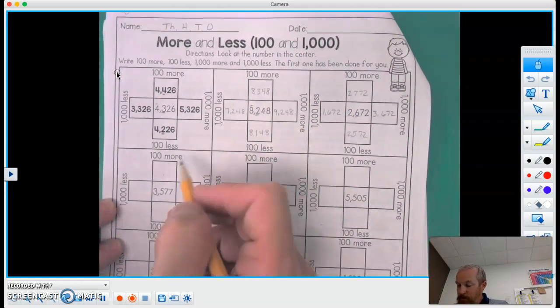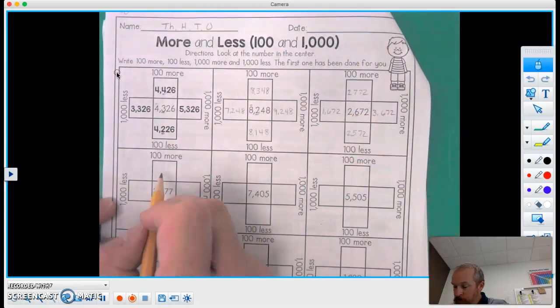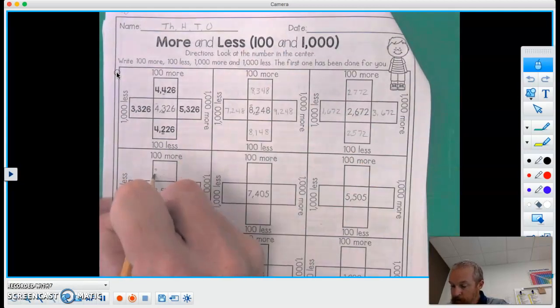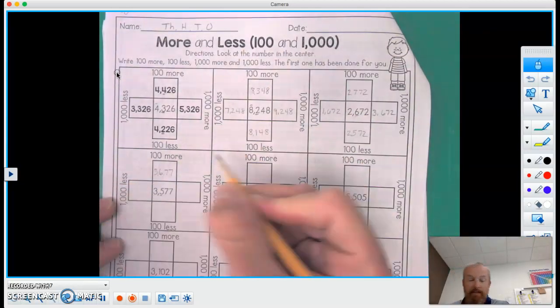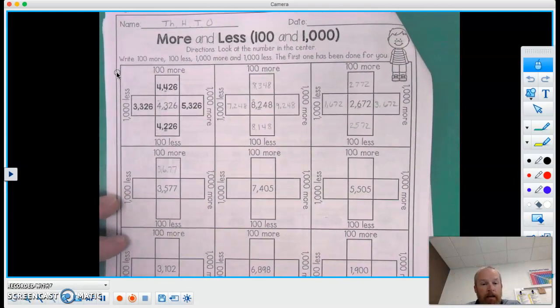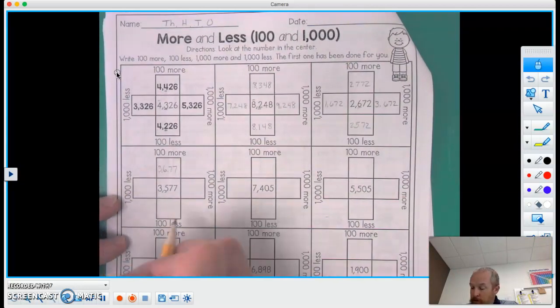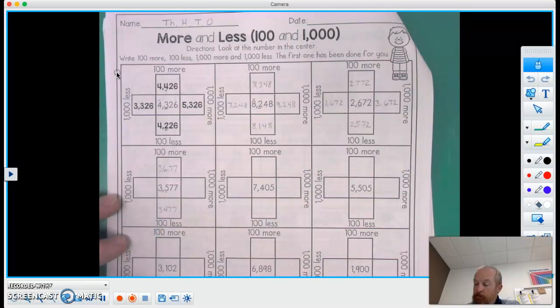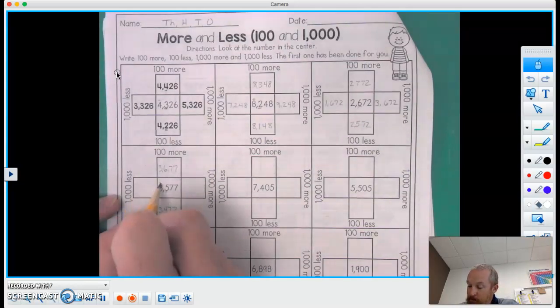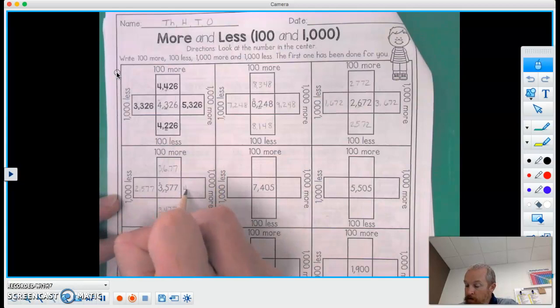1,000 less, 1,000 more, 100 more, 100 less. Let's do 100 more. That's 3,677. And 100 less would be 3,477. 1,000 less, 3. So we'll go 2,577. And 4,577.